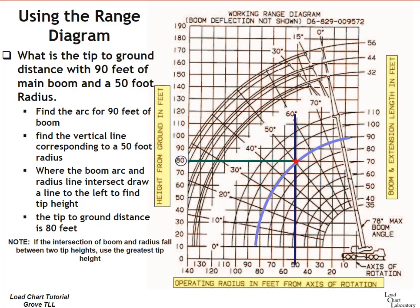A note, and I'll mention this again. It will be illustrated in the next example, but let's go ahead and mention it now because it's important. If the intersection of boom and radius fall between two tip heights, use the greatest tip height. What does that mean? Well, if your green line ended up falling between 80 feet and 90 feet, you would use 90 feet as your tip height. If it fell between 70 feet and 80 feet, you would use 80 feet as your tip height. Always use the greatest tip height.